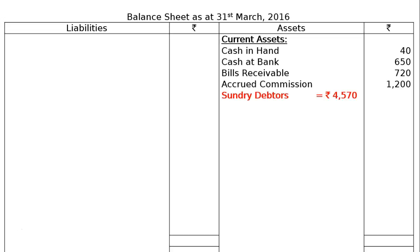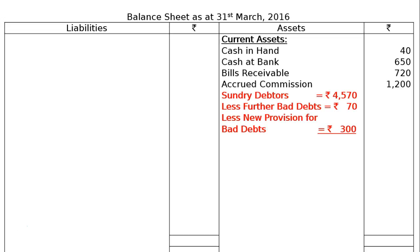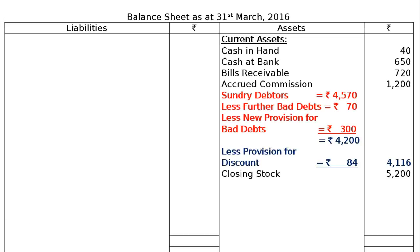Next is sundry debtors Rs. 4,570, less further bad debts Rs. 70, less new provision for bad debts Rs. 300, giving Rs. 4,200. Less provision for discount at 2% on Rs. 4,200, that is Rs. 84. The final column figure for debtors is Rs. 4,116. Next is closing stock, being a current asset shown here, Rs. 5,200.